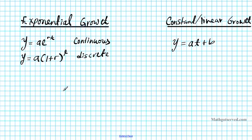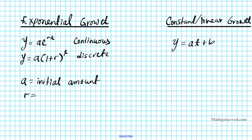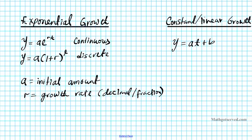What do the variables mean in the exponential growth equation? A is basically the initial amount. R is the growth rate — remember, the growth rate has to be in decimal or fraction form. And t is the time.